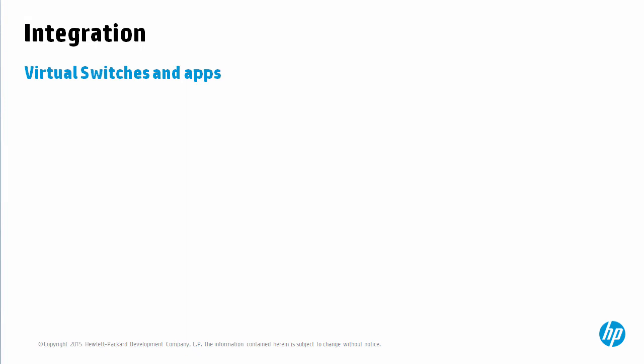Once you have the HP controller working, the next thing you'll want to do is create a network that integrates with it. The easiest way to do that is to use Mininet, which is free software available from mininet.org. This allows you to dynamically create virtual networks running on your laptop or PC and then test the integration between Mininet switches, which support OpenFlow, and the HP controller.